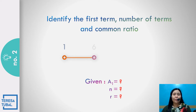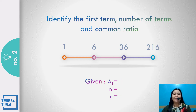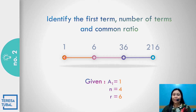Question number two: Find the first term, the number of terms, and the common ratio in the given geometric sequence 1, 6, 36, and 216. Correct! The first term is 1. The number of terms is 4, so n is 4. And the common ratio is 6 divided by 1. The answer is equal to 6.